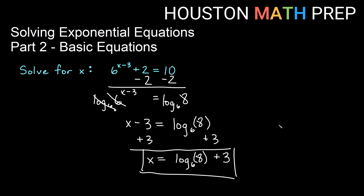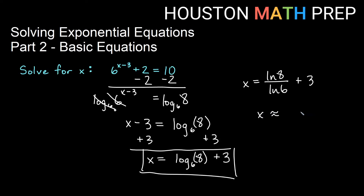For a decimal approximation, use change of base: x equals natural log of 8 over natural log of 6, then add 3 separately once you compute that. Typing that in the calculator gives a decimal approximation of about 4.161.